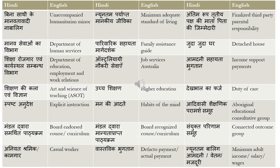The second word is 'Nyunatham Paryapt Manakiyya Jeevika,' which means 'minimum adequate standard of living.' Nyunatham is minimum, Paryapt is adequate, Manakiyya is standard — because Manak means standardized — and Jeevika is living. So in this context we use Manakiyya Jeevika.